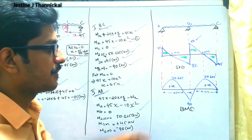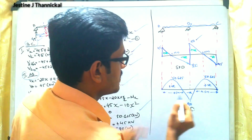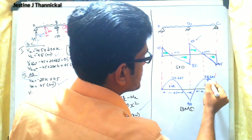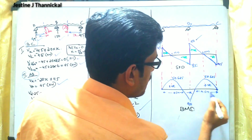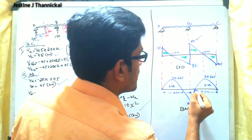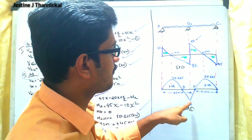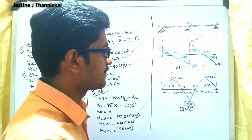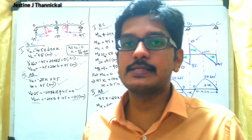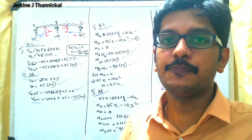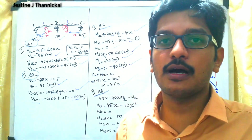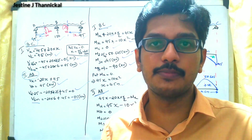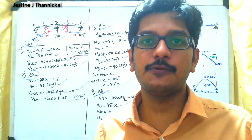For the BMD: at both ends A and C, the moment is 0. At 2.25 m it is 50.625 kN·m (maximum). At 4.5 m it is 0 again, and at 6 m (point B) it is −90 kN·m. We first determined the degree of indeterminacy, then found reactions Ra, Rb, and Rc, and used them to draw the SFD and BMD. I hope this section is clear. Thank you.